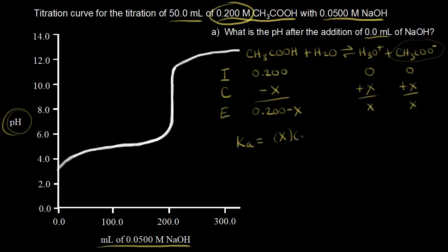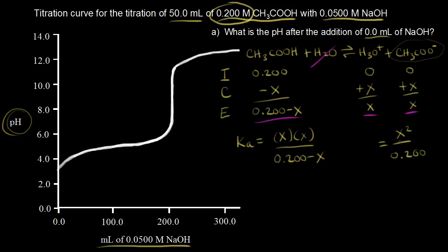The Ka expression is X times X over (0.200 minus X), leaving water out of the equilibrium expression, giving X² over (0.200 minus X). If we assume X is very small compared to 0.200, we can approximate 0.200 minus X ≈ 0.200. So we rewrite this as X² over 0.200 equals Ka. The Ka for acetic acid is 1.8 × 10⁻⁵.